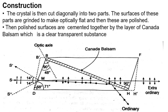The crystal is then cut diagonally into two parts. The surfaces of these parts are ground to make them optically flat and then polished. The polished surfaces are cemented together by a layer of Canada balsam, which is a clear transparent substance.